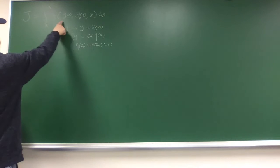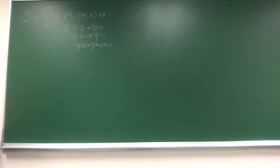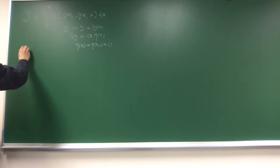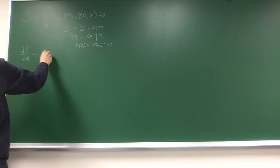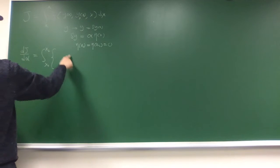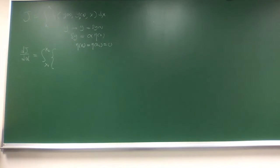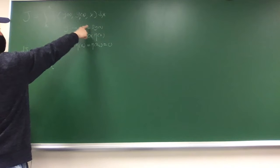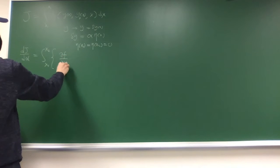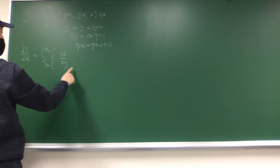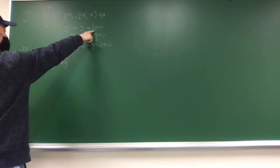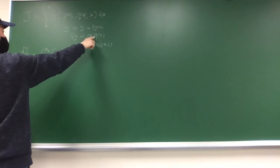Now y becomes a function with a variable alpha that you can take derivatives with respect to. So we take the derivative of J with respect to alpha - dJ/d(alpha) - because there is alpha inside the integrand. Using the chain rule, since there's no alpha in x (x is just the integration variable), we have partial f over partial y times the derivative of y with respect to alpha, which gives us eta.